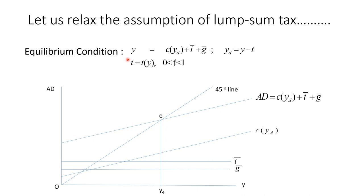So if you recall the equilibrium condition: Y equals C as a function of disposable income, plus investment which is exogenously given, plus government expenditure which is exogenously given. And Y-D was equal to Y minus T. But instead of T equal to T-bar, we are now assuming T as a function of Y, with T-prime greater than zero but less than one — meaning as income increases, tax liability also increases. So if your income is 100 rupees and T-prime is 0.2, you pay 20 rupees as tax.